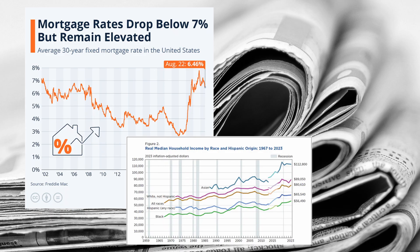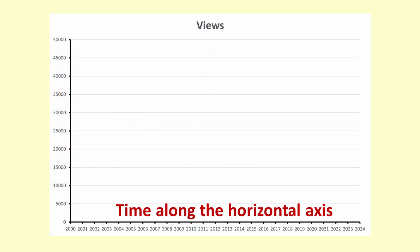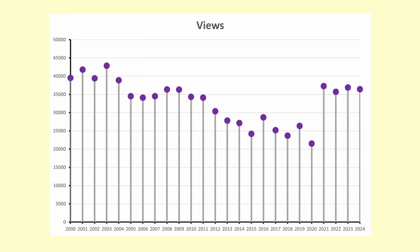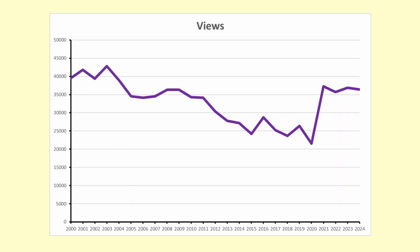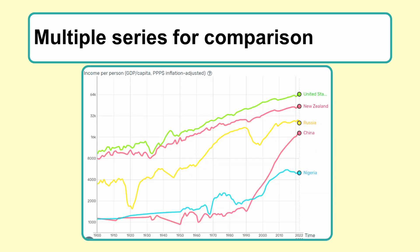Time series graphs are often shown in news media to illustrate what's happening over time. A time series graph has the time scale along the horizontal axis at the bottom and the response variable or measurement on the vertical axis. There is one measurement per time period for a single series, and the dots are joined up. Sometimes a succession of bars is used instead of a line. Multiple time series can be shown on a single graph for comparison.